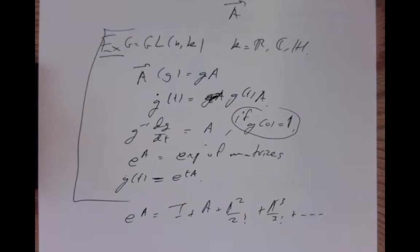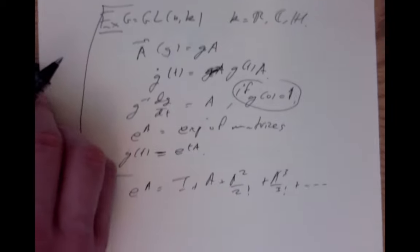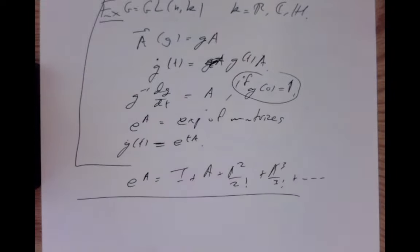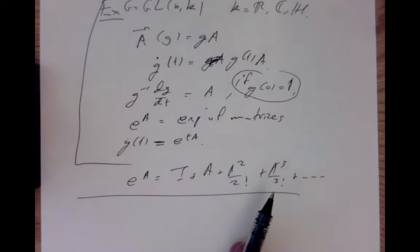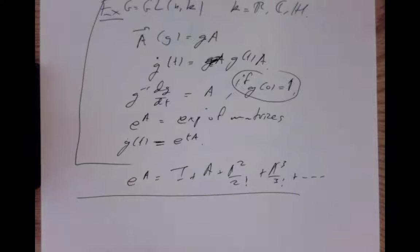That explains why it's called an exponential. To be precise, there are Lie groups for which the exponential map isn't naturally thought of as an exponential — there are examples in the notes where you can calculate the exponential in coordinates and it doesn't give you an expression involving exponentials of numbers. So it's a bit of an odd name, but it does have some reasonable properties.